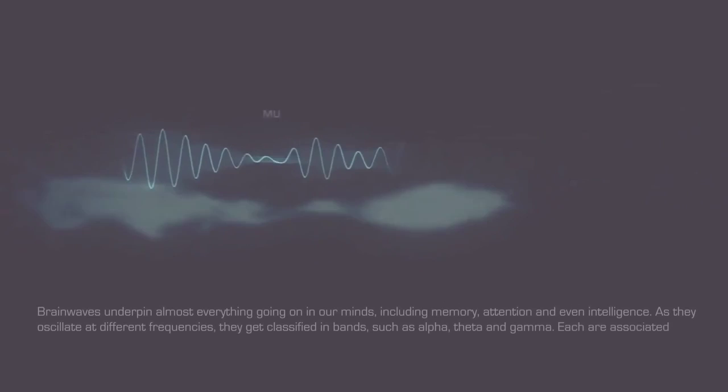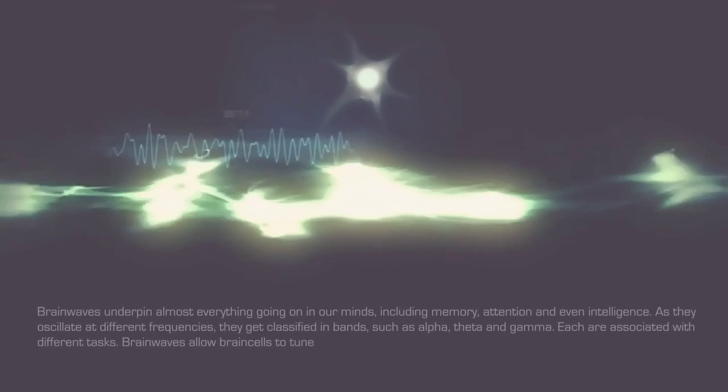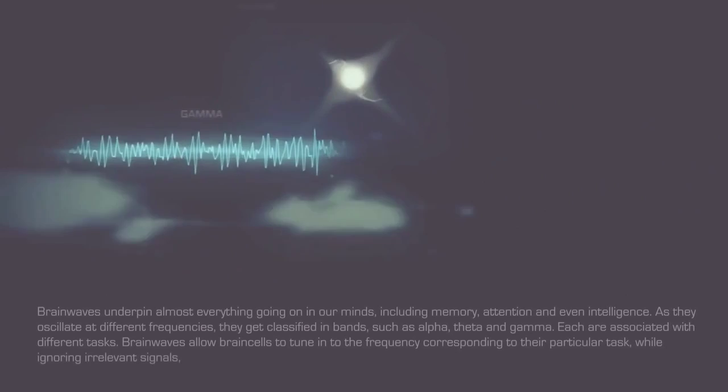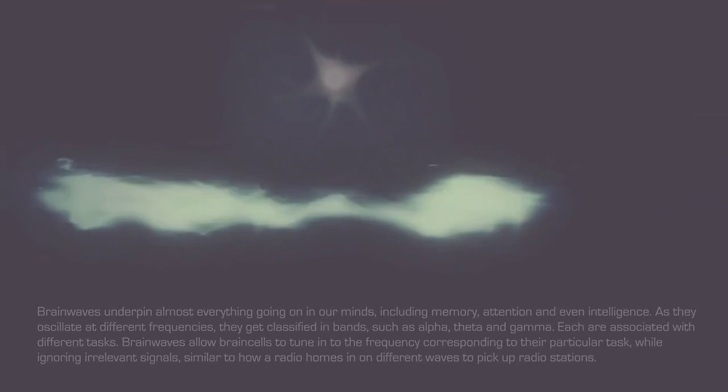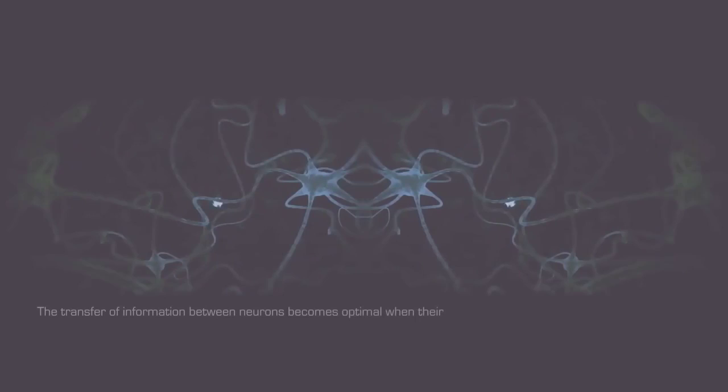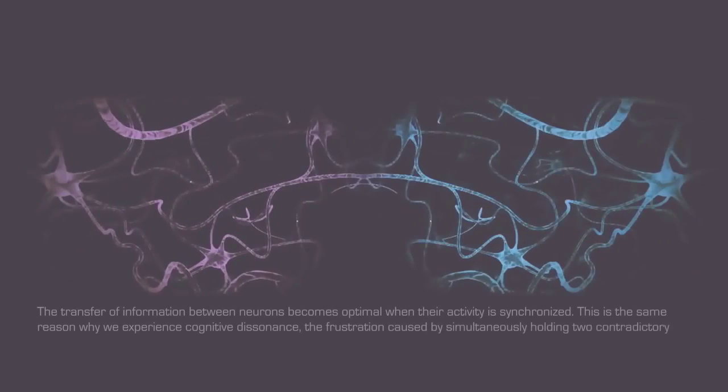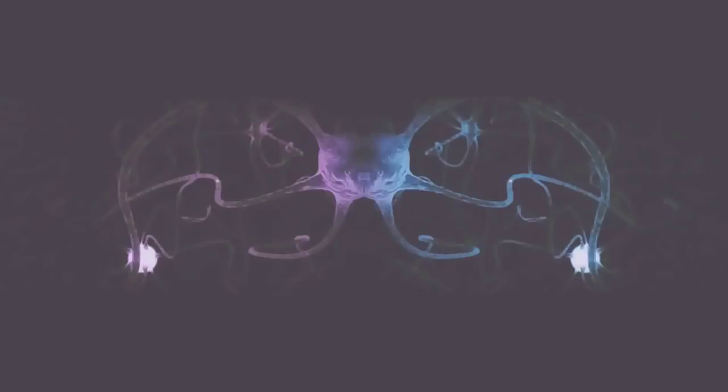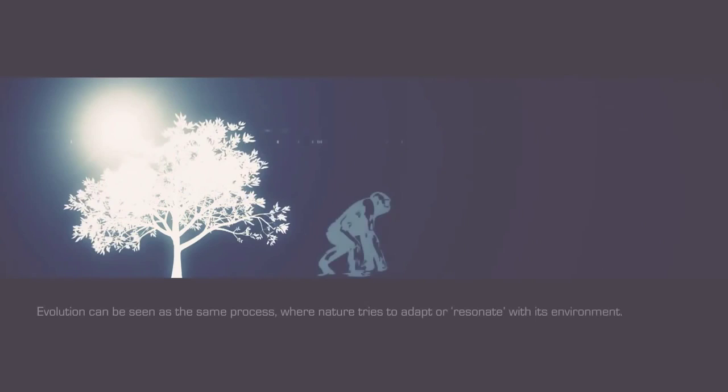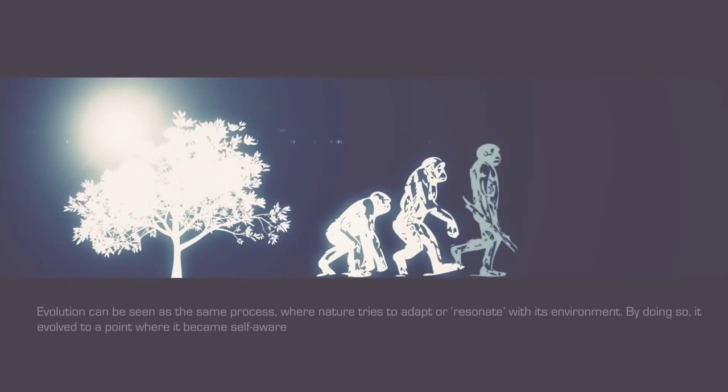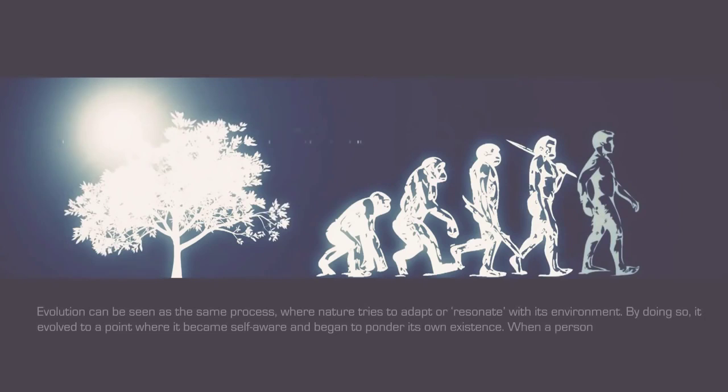Brainwaves allow brain cells to tune into the frequency corresponding to their particular task while ignoring irrelevant signals, similar to how a radio homes in on different waves to pick up radio stations. The transfer of information between neurons becomes optimal when their activity is synchronized. This is the same reason why we experience cognitive dissonance - the frustration caused by simultaneously holding two contradictory ideas. Will is merely the drive to reduce dissonance between each of our active neural circuits. Evolution can be seen as the same process where nature tries to adapt or resonate with its environment. By doing so, it evolved to a point where it became self-aware and began to ponder its own existence. When a person faces the paradox of wanting purpose while thinking that human existence is meaningless, cognitive dissonance occurs.